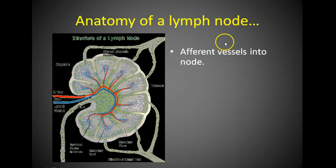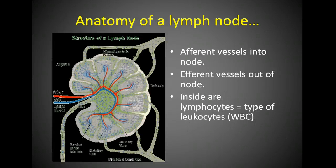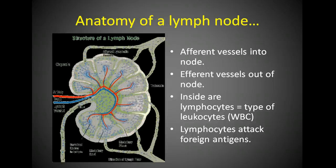Anatomy of a lymph node: afferent vessels take the lymph into the node, and efferent vessels take it out. Inside the lymph node are lymphocytes, which are a type of leukocyte — a type of white blood cell. As lymph travels through the lymph node, if there are any microorganisms — bacteria, viruses, parasites — the lymphocytes will recognize them as foreign and engage the body in an attack against the microorganism. Lymphocytes will start to attack these foreign antigens.